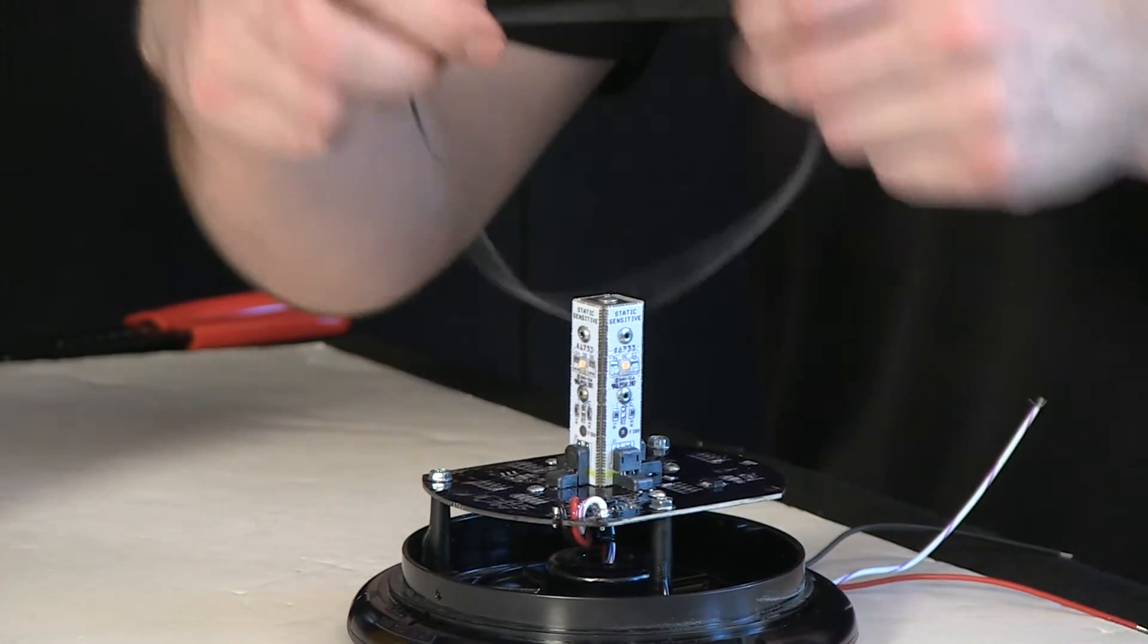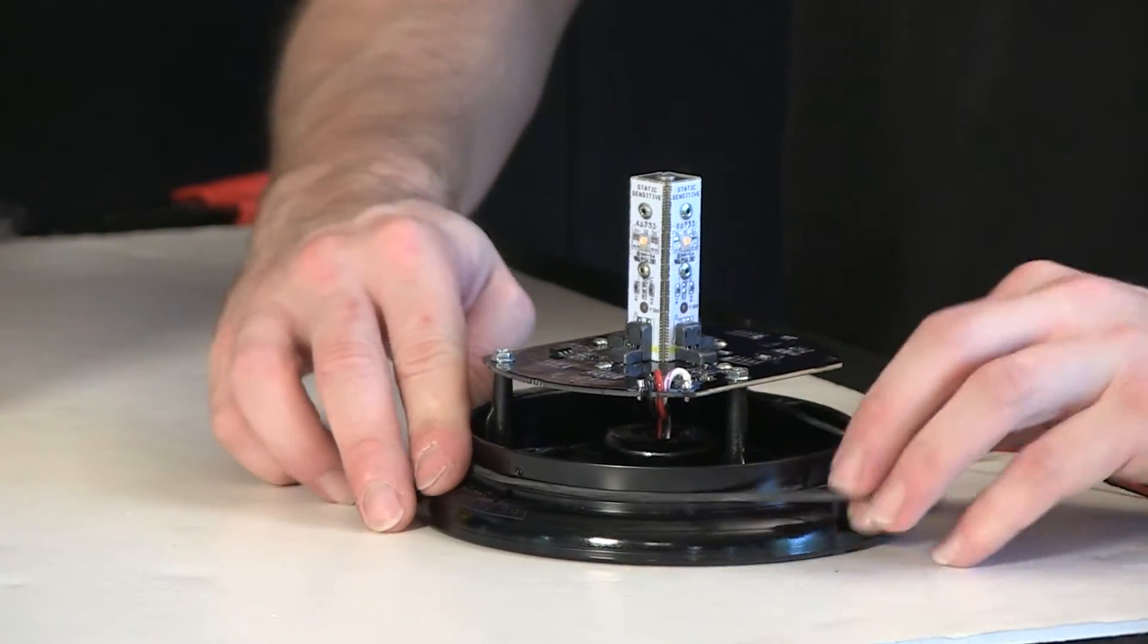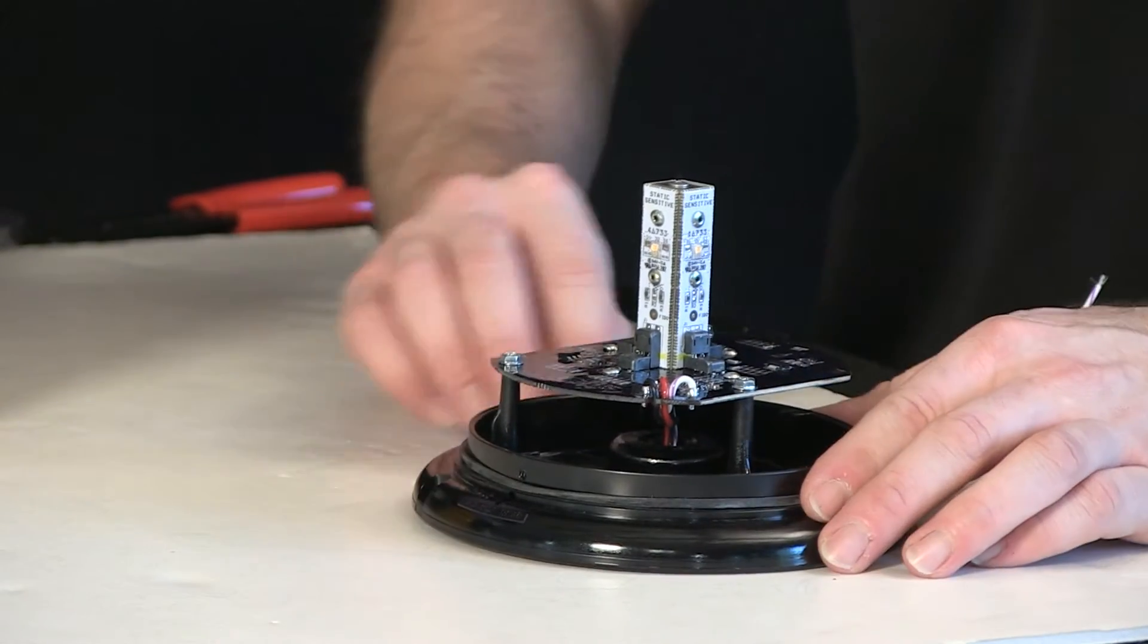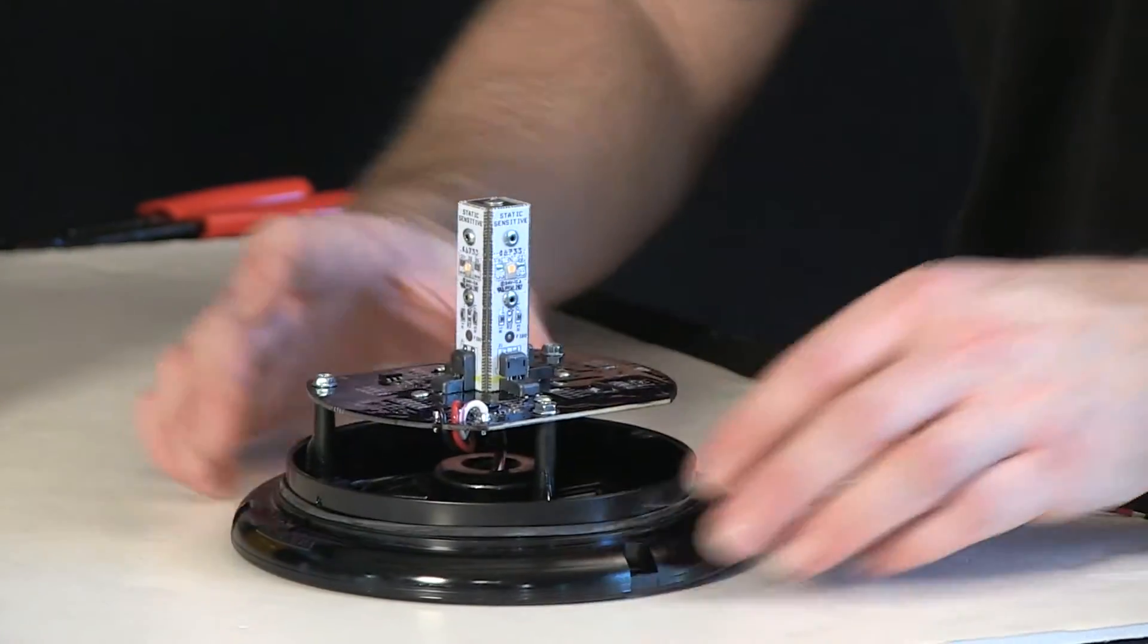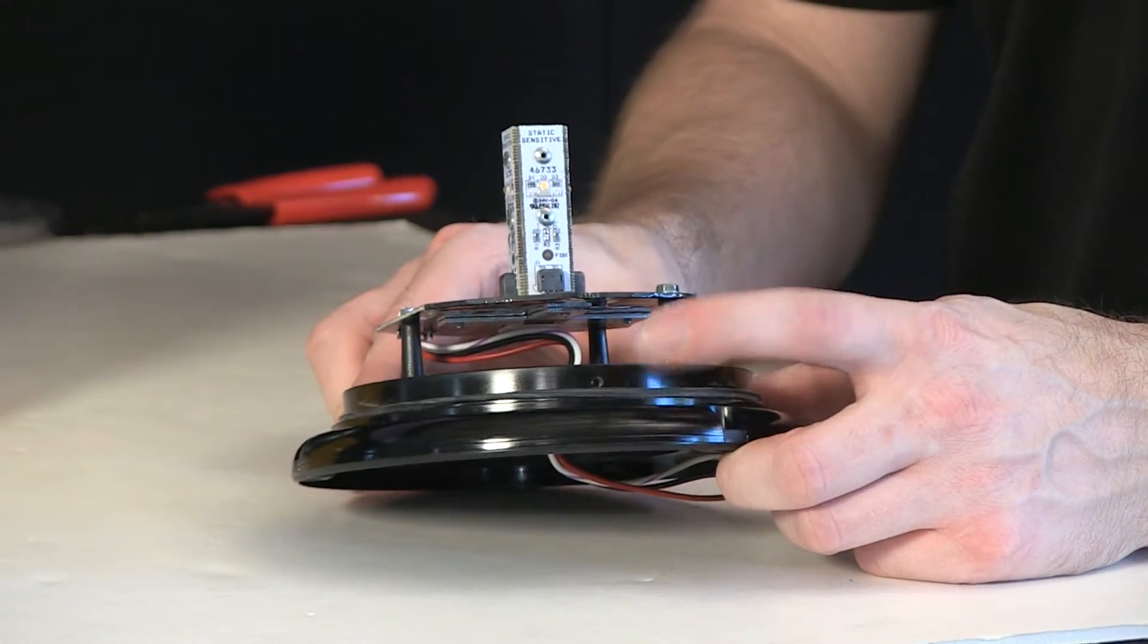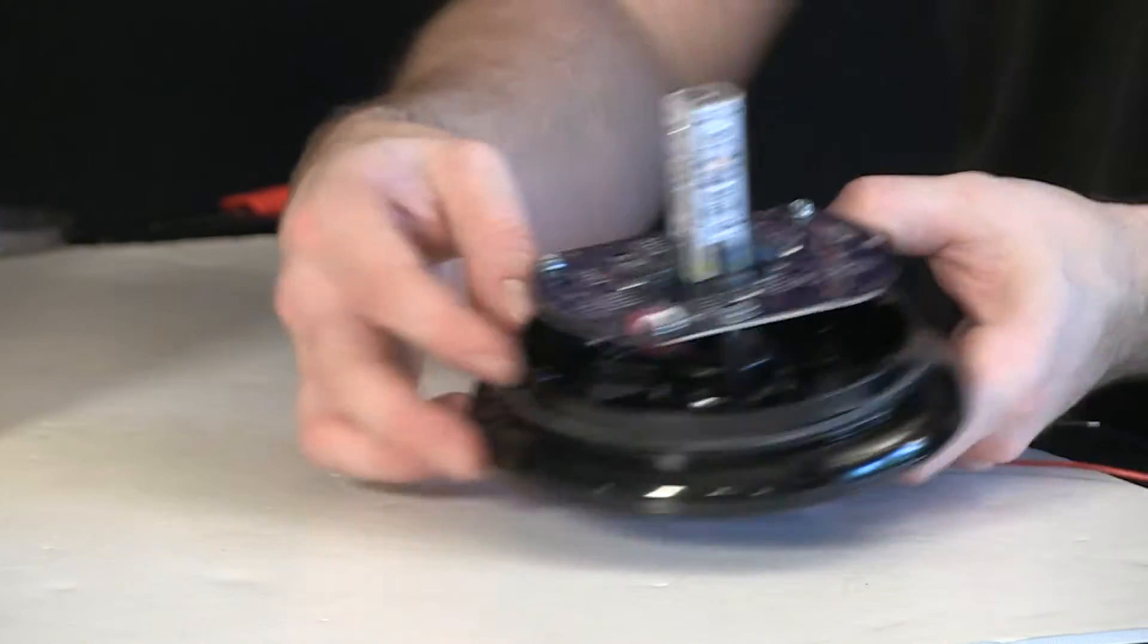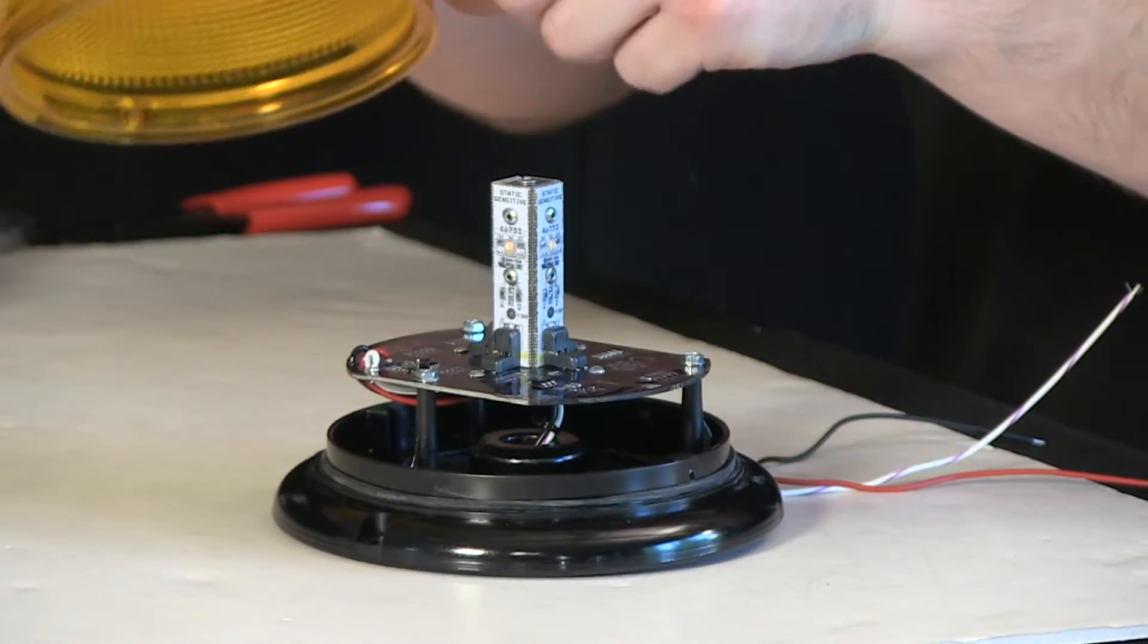We'll go ahead and take the gasket, realign it around the edge here. And for the dome, again it affixes onto the base with two screw points. So one here, one here. We'll realign the mount holes.